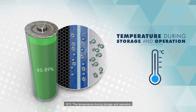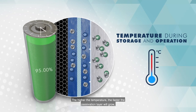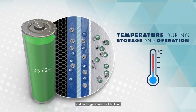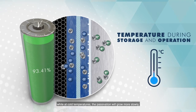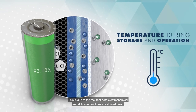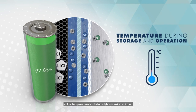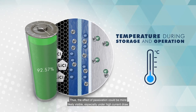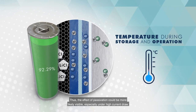Number three: the temperature during storage and operation. The higher the temperature, the faster the passivation layer will grow and the bigger crystals will build up. While at cold temperatures, the passivation will grow more slowly but the layer will be more compact. This is due to the fact that both electrochemical and diffusion reactions are slowed down at low temperatures and electrolyte viscosity is higher. Thus, the effects of passivation could be more likely visible, especially under high current draw.